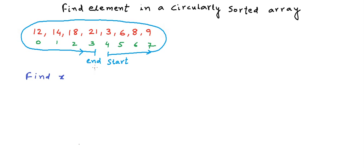So how do we solve this problem? The simplest approach would be to perform a linear search, where we scan the whole array to look for x. But in this approach, we will not make use of the property of the array that it is circularly sorted, and the time complexity for this approach would be O(n), where n is the number of elements in the array.